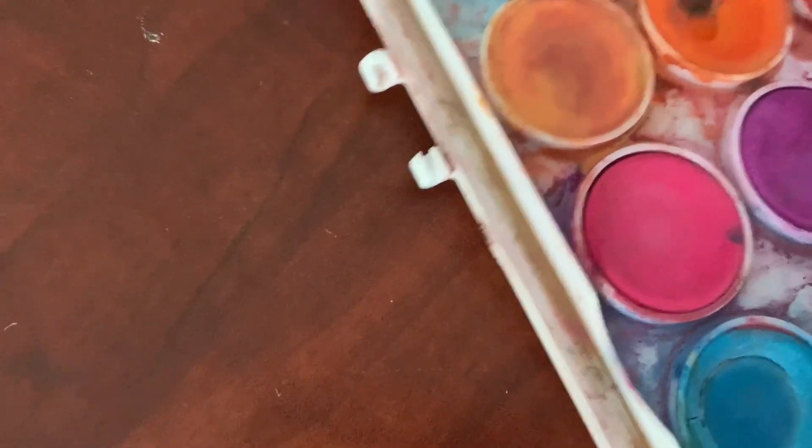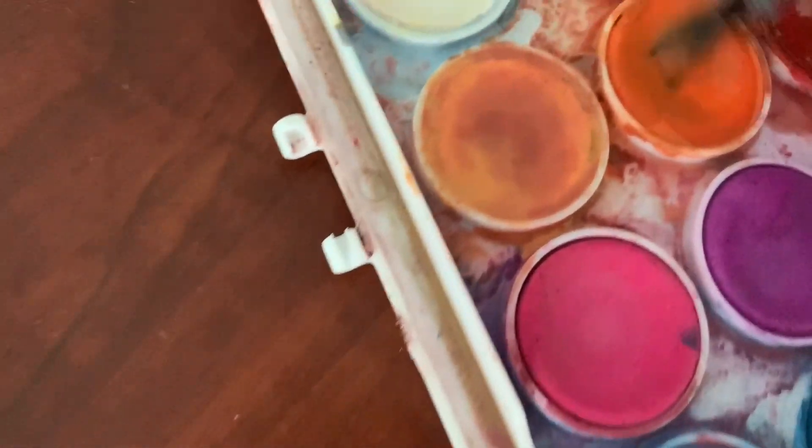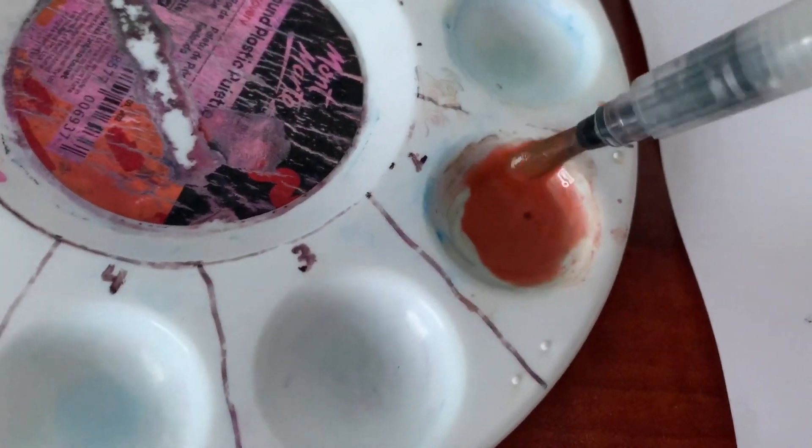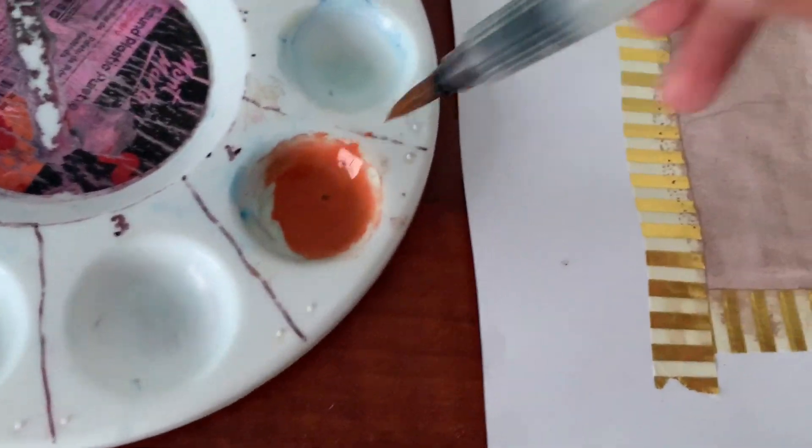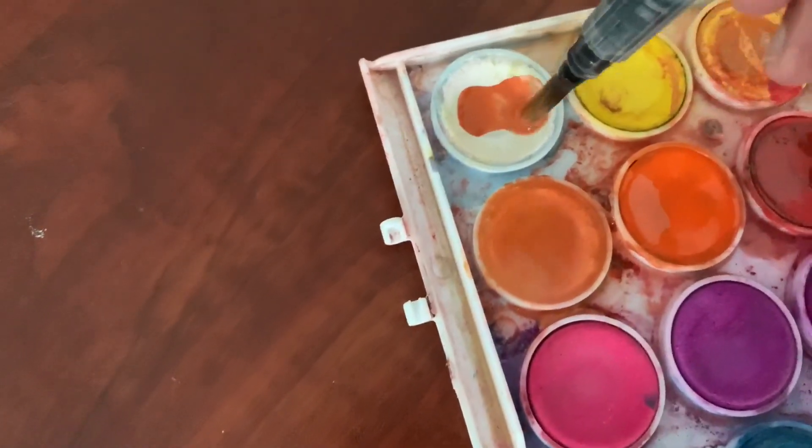But that was way too red, so I'm just gonna get some more orange to try to revive that like woody color of the blocks. So I'm just gonna try and lighten up the color using white.